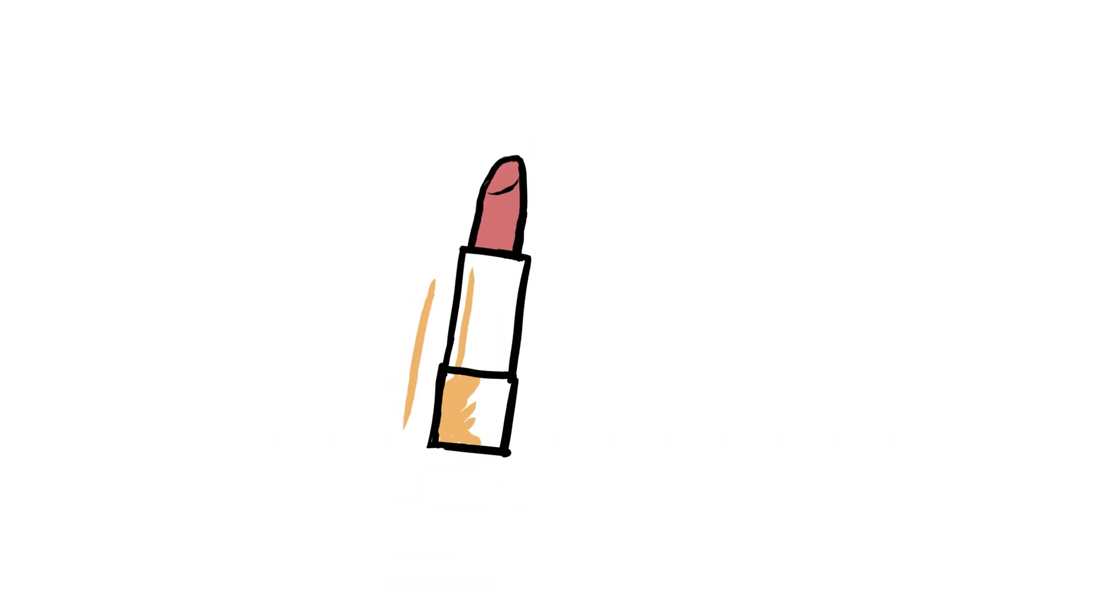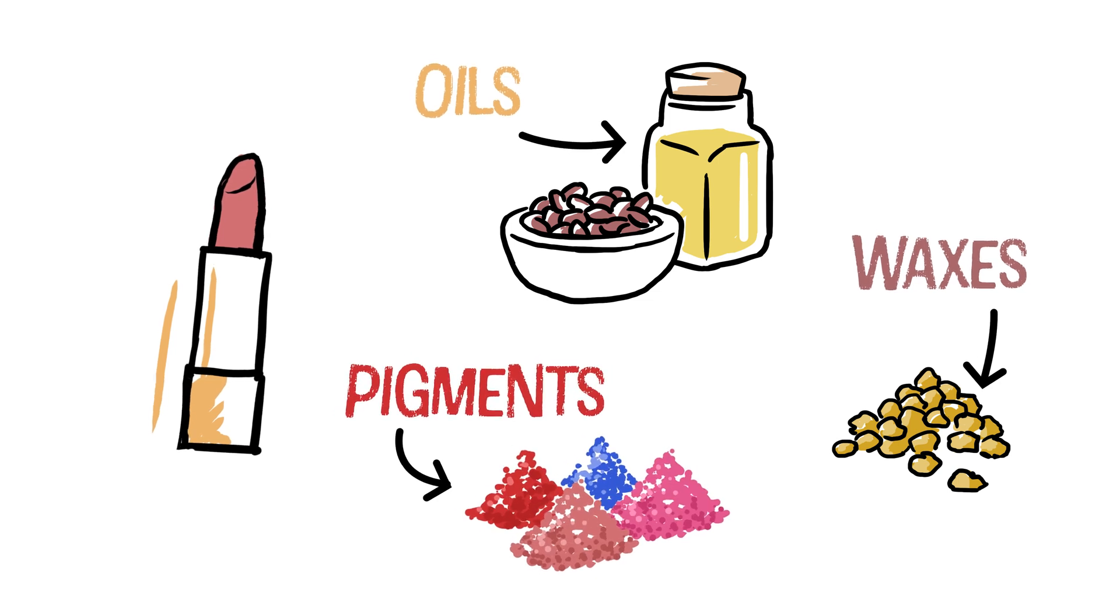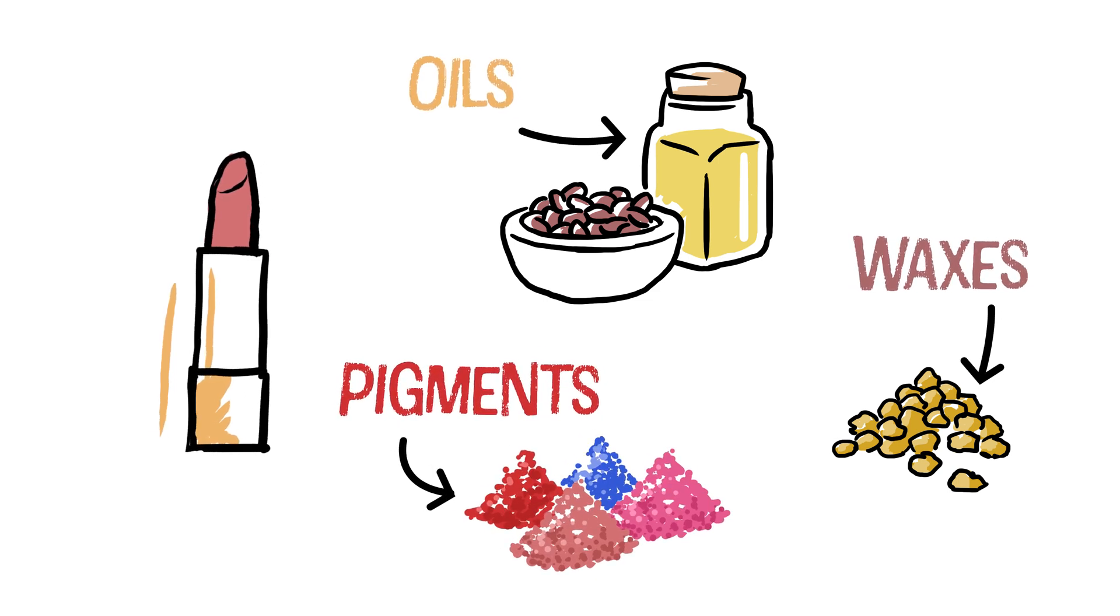Okay, but what even is lipstick? Well, at its core, lipstick is basically a smooth blend of waxes, oils, and pigments. That's what gives it its shape, texture, and color.